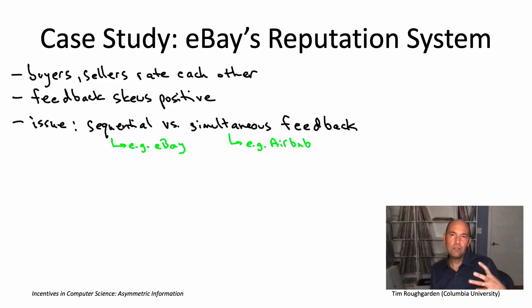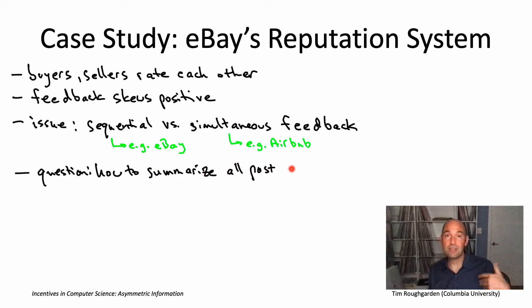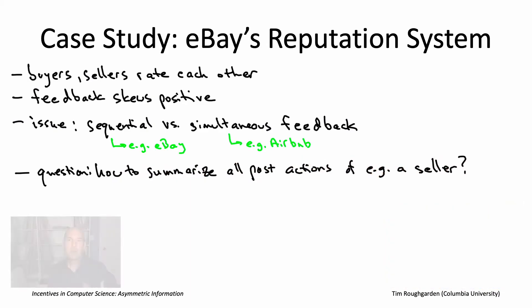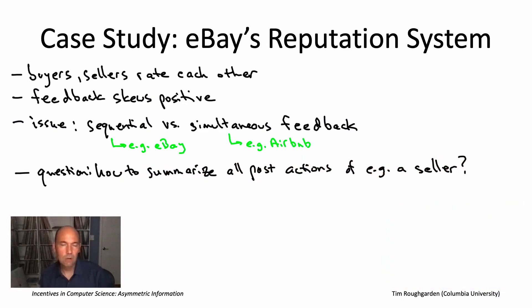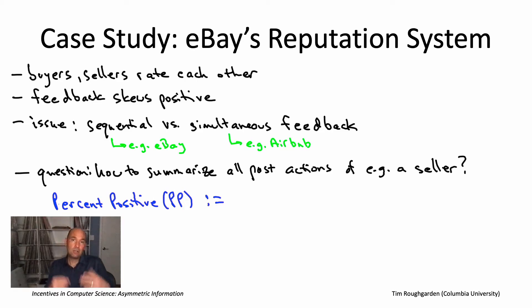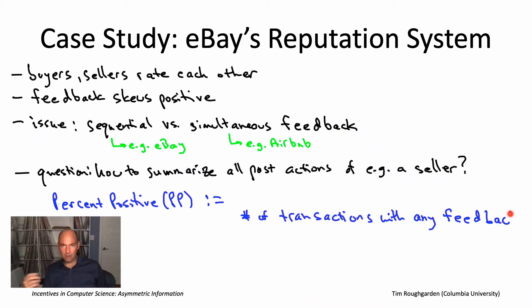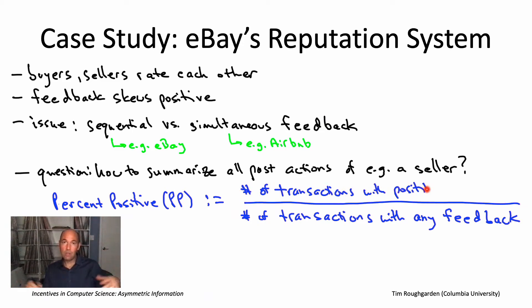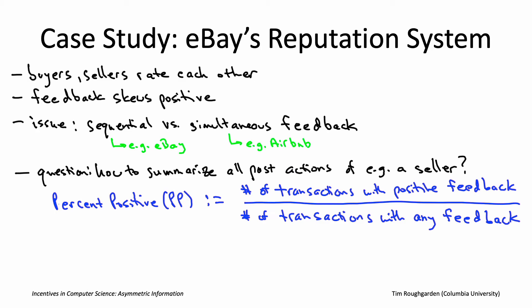The second thing eBay looked into was how to summarize the past history of a seller. For a long time they used a measure called Percent Positive, or PP: look at all transactions a seller ever had that received any feedback, and calculate the fraction that were positive. So if a seller had a PP score of 98%, that would probably sound pretty good — 98% of rated transactions had positive feedback.